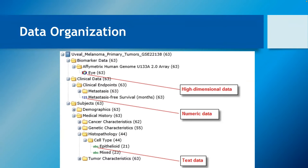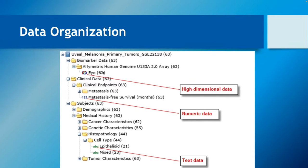We have numeric data — in this case survival time in months, either a whole number or floating point. Under cell type we have text data, or categorical data: a set of text strings at that level for those nodes. You can pick either of those cell type categories and drag them into queries. TranSMART also has high-dimensional data — gene expression data where you have data for thousands of genes or probes on an expression array.